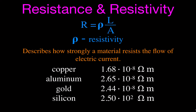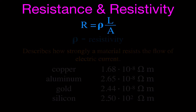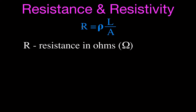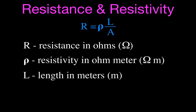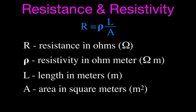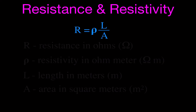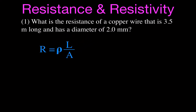To summarize: the equation for resistance is R = ρL/A. R is the resistance, measured in ohms. Rho (ρ) is the resistivity in ohm·meters. L is the length, which must be in meters. A is the cross-sectional area, which must be in square meters. Oftentimes you'll have to convert — as in this example, where we'll need to convert the diameter from millimeters to meters squared.